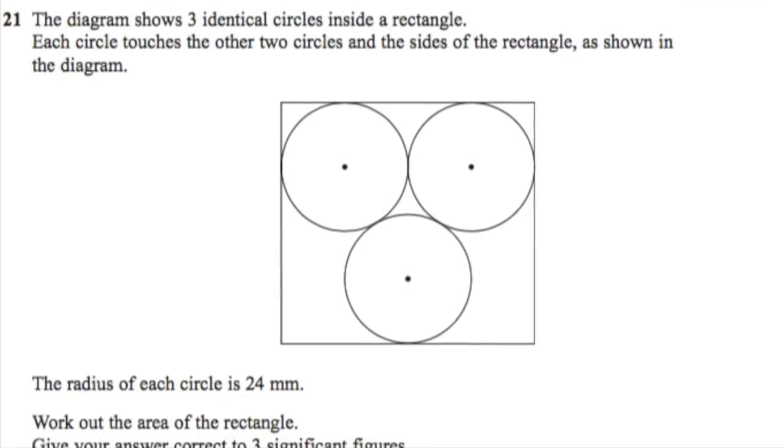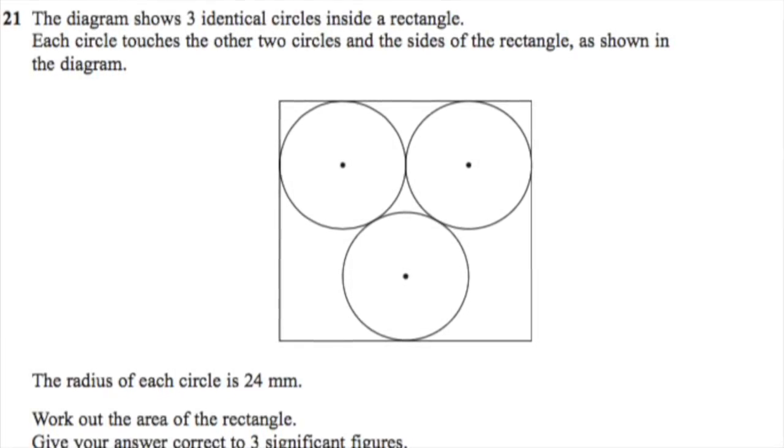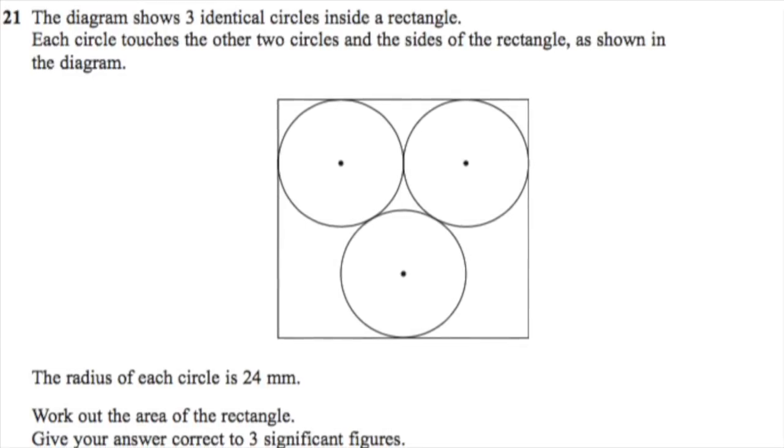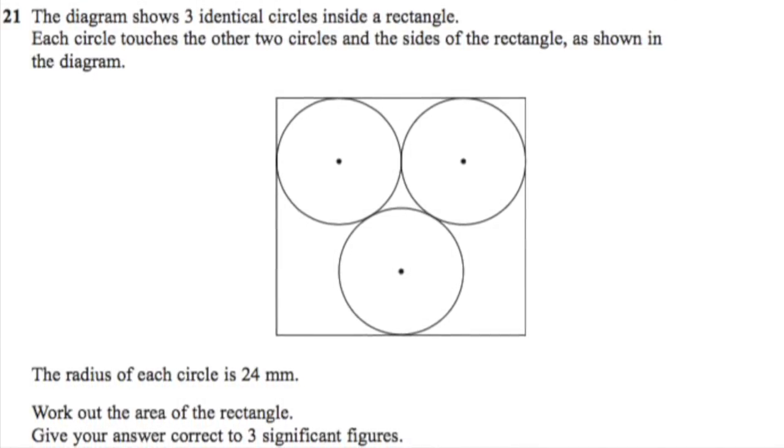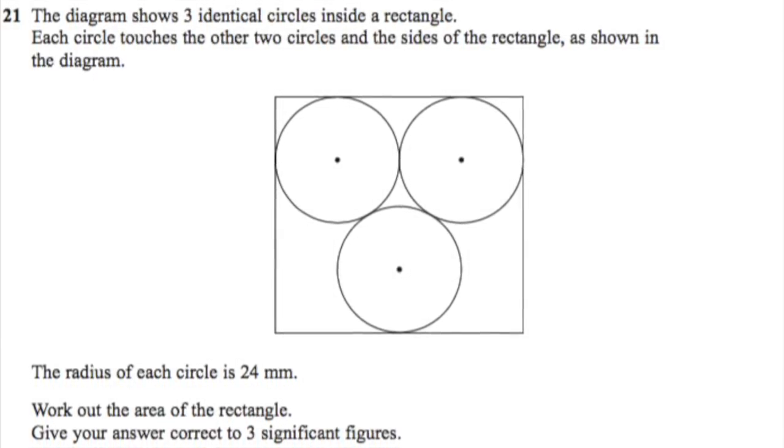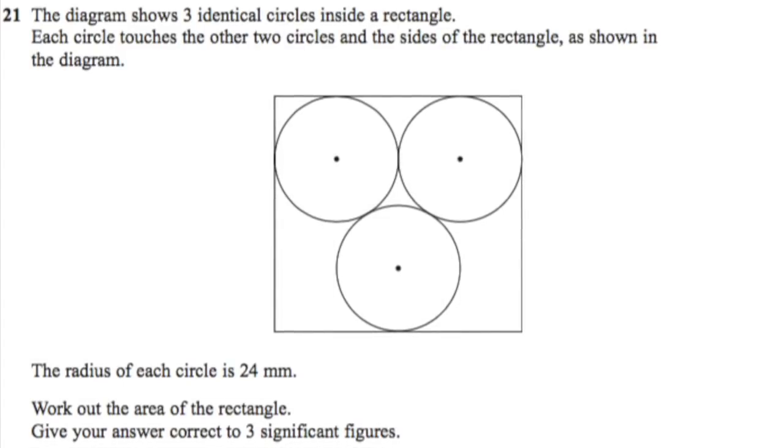Many had trouble with question 21, a tricky geometry problem involving finding a missing length using the Pythagorean theorem. This really cemented the fact that the new grade 9 was going to be a lot more difficult than the old A star.